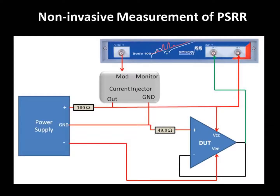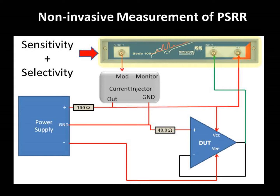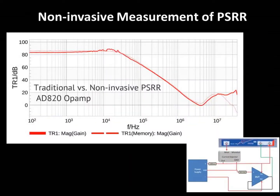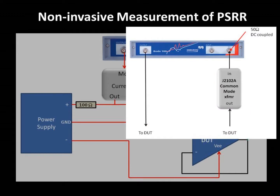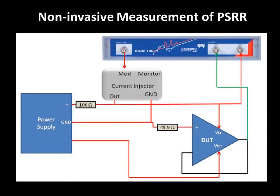This slide shows a common method for non-invasively measuring PSRR, in this case using an op-amp as the DUT. In some cases there is an isolation resistor such as the 100 ohm device shown here, which allows a signal to be generated. However, we have also been able to perform this measurement without isolation resistors, using the non-zero impedance present in the circuit to generate measurable signals. The very high sensitivity and selectivity of a VNA allows very small signals to be measured, even in cases where there is a good deal of system noise. These measurements show little difference between the traditional PSRR measurement, which is the faint line, and the non-invasive measurement, which is the darker line. Note that the use of a common mode transformer such as the J2102A on channel 1 or 2 of the VNA, or the use of differential probes, can be used to improve the fidelity of the PSRR measurement further.